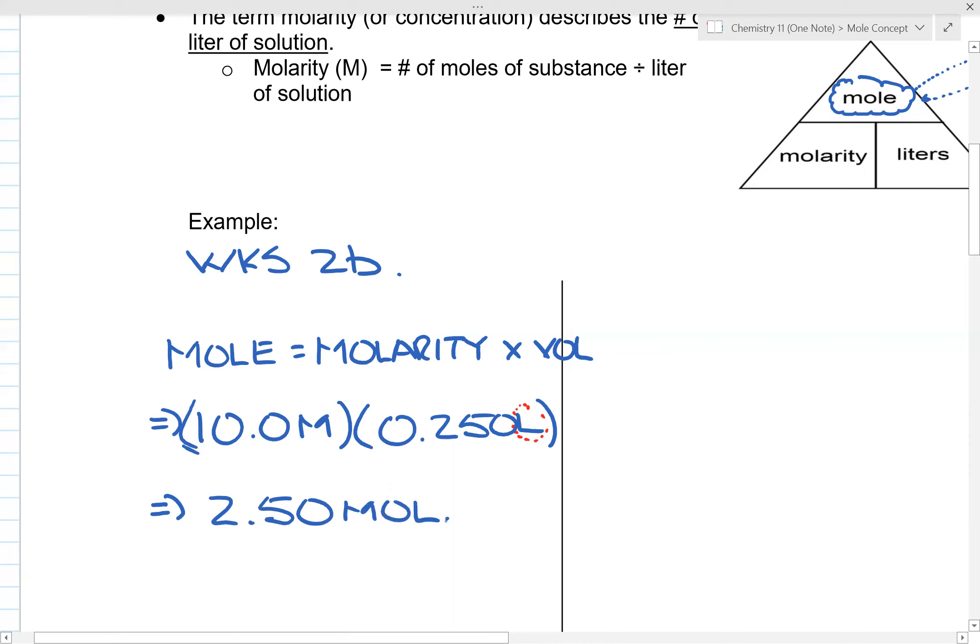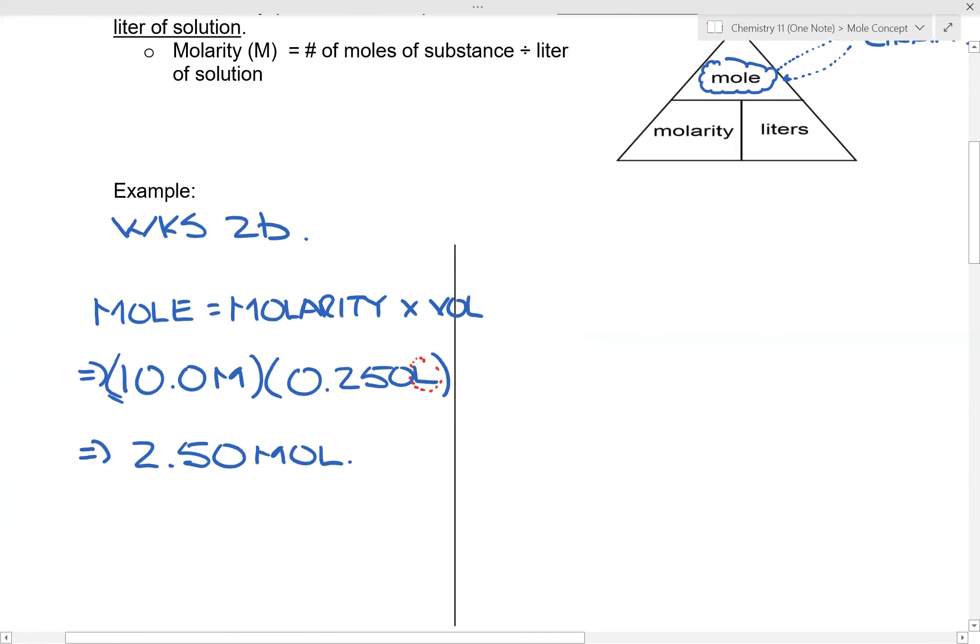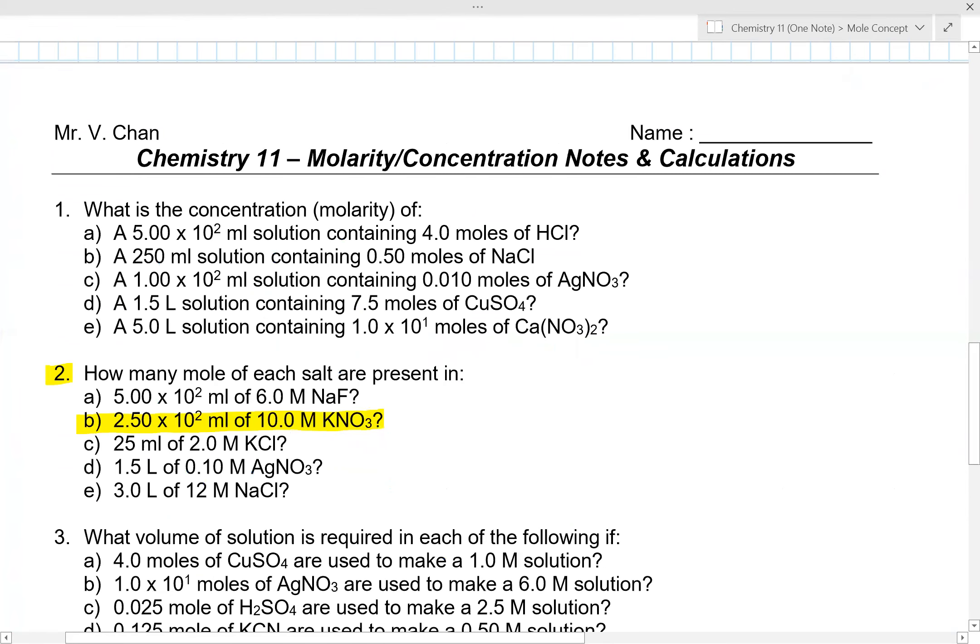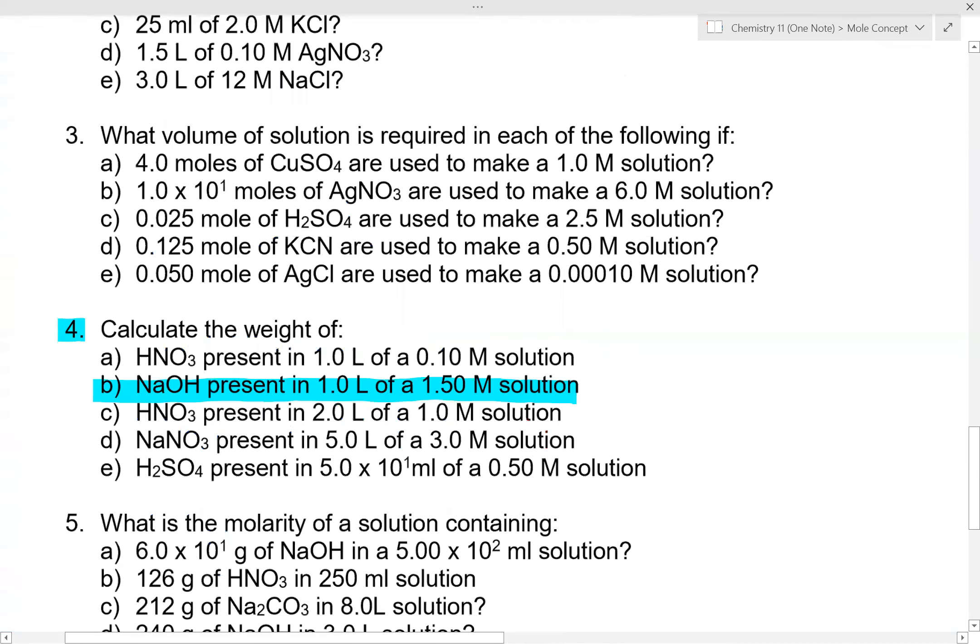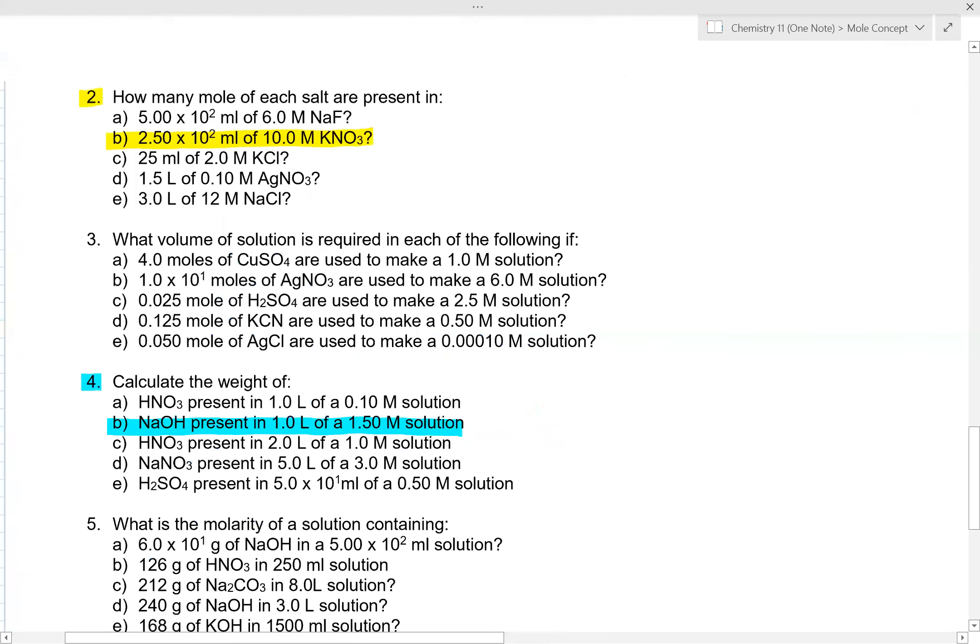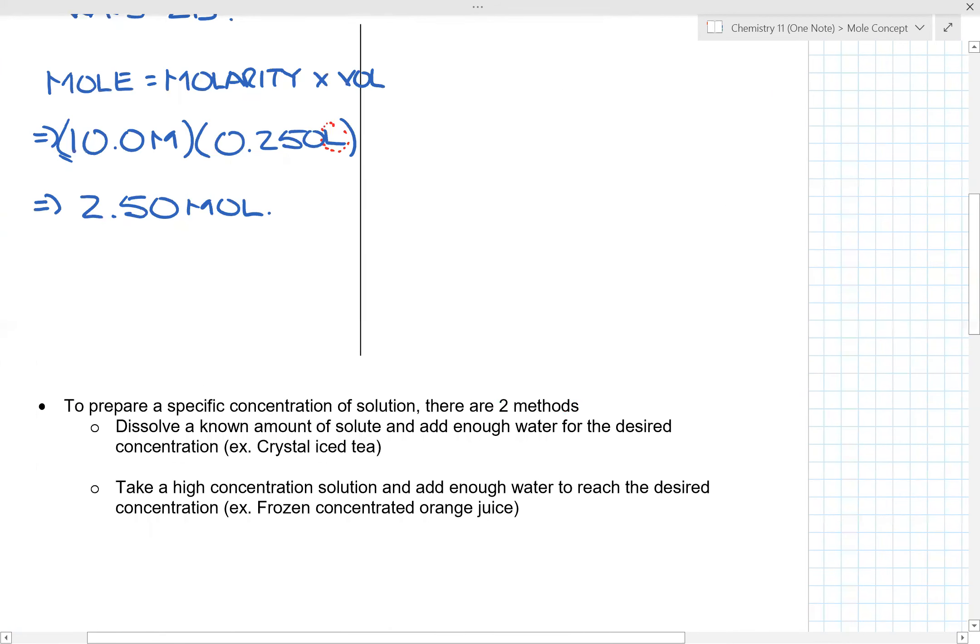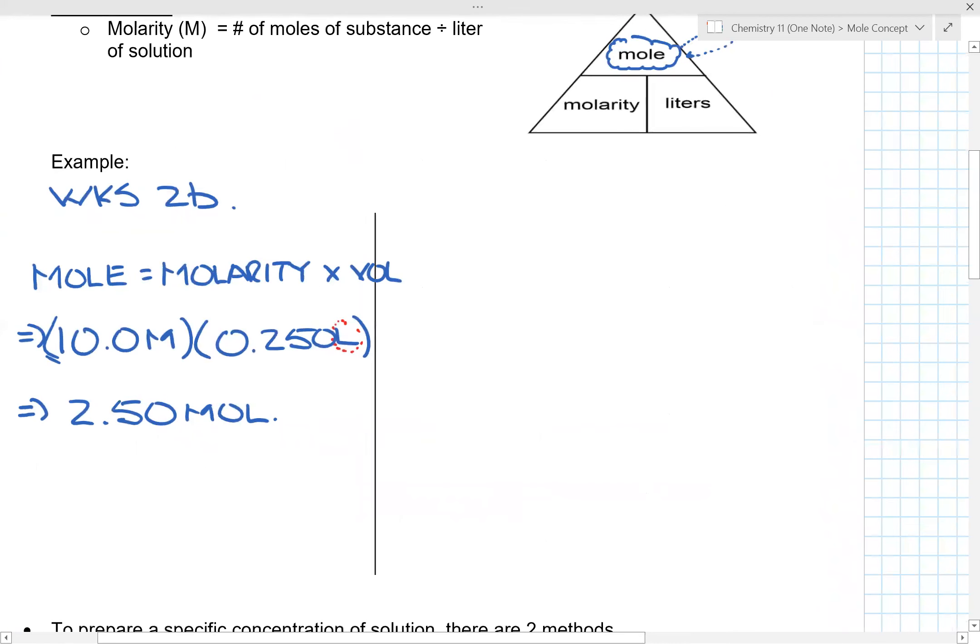The second example is question 4. It says calculate the weight of NaOH present in 1 liter of a 1.5 molarity solution. In this particular case, we have to break this down into two steps. So worksheet 4b.